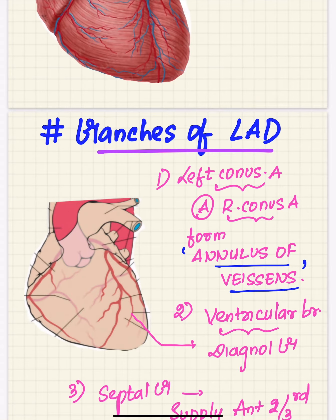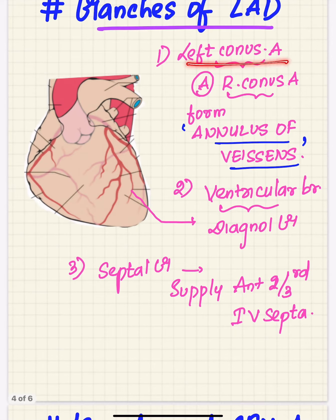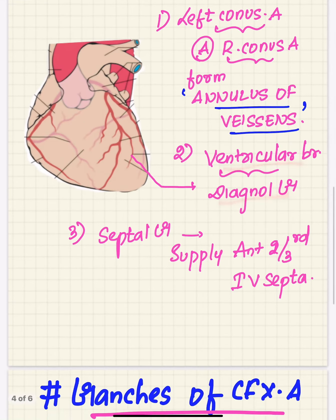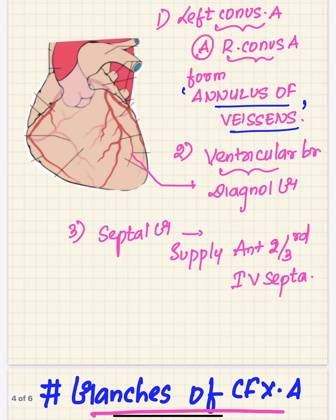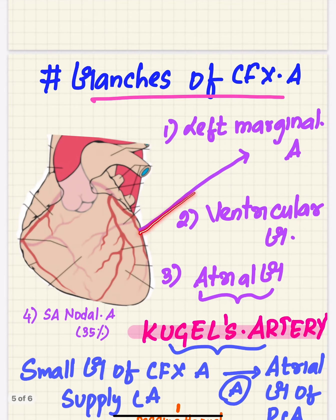Branches of the left anterior descending artery include the left conus artery, which performs anastomosis with the right coronary artery to form a necklace-like structure around the pulmonary trunk — forming the annulus of Vieussens — and the ventricular branch called the diagonal branch, and the septal branch that supplies the anterior two-thirds of the interventricular septum.